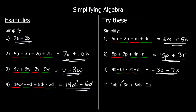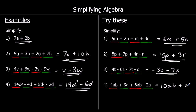Question 4: we've got ab terms and a terms. ab and a are different numbers — we can only add together things that are the same. For ab: 4 plus 6 is 10, so 10ab. For a: 3 take away 2 is 1 — we don't write 1a, we just write a. So the answer is 10ab plus a.